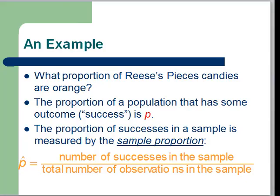We call that P. That's going to be our symbol for the population proportion. So that would be the percentage of all Reese's Pieces candies that are orange.